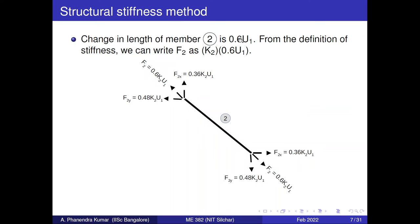To evaluate the force generated in member 2, recall the definition of stiffness: stiffness is defined as force generated in the member per unit deformation. So k2 equals f2 divided by the change in length of member 2. Since the change in length is 0.6 u1, the force in member 2 is k2 times 0.6 u1. This is a tensile force because the length has increased — positive change in length results in tension.